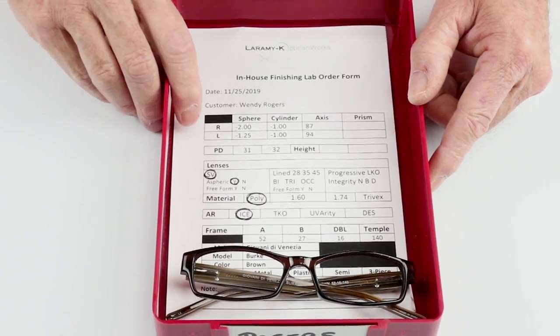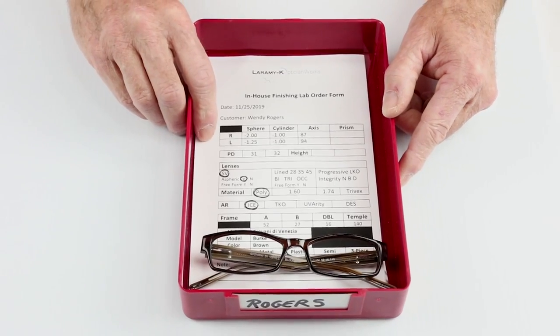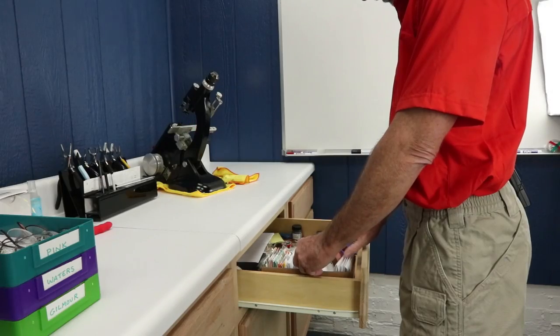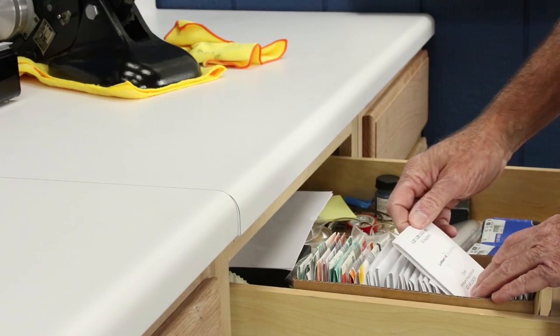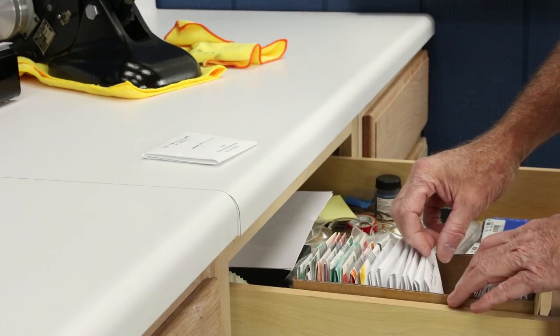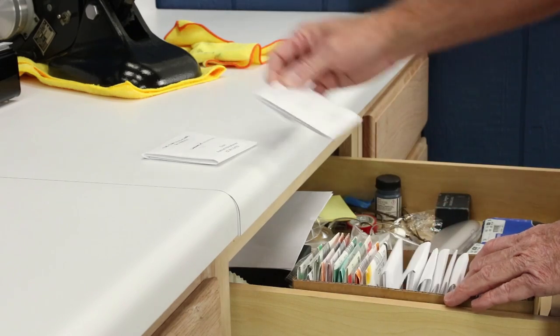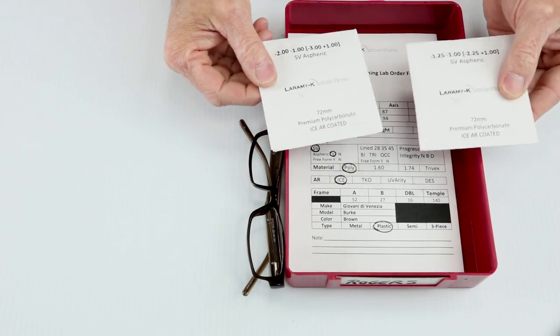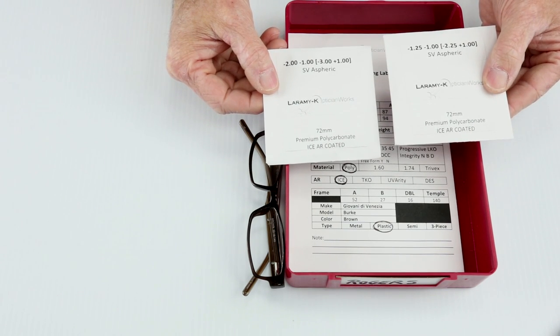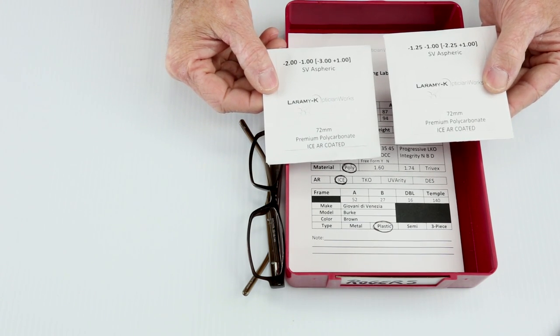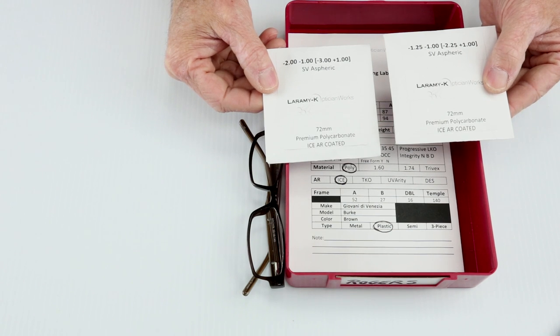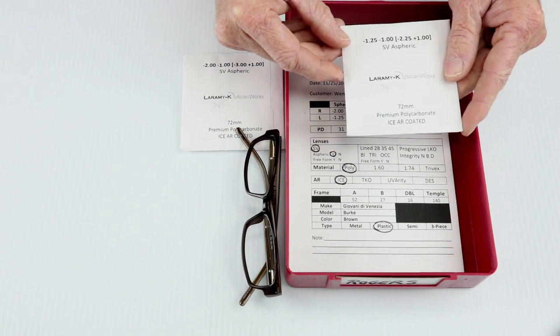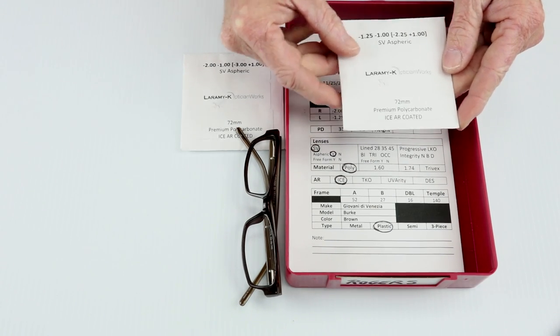The very first thing you're going to do is make sure that those lenses are actually in stock. So let's go over to the lens stock drawer. Make sure we got them. Yes, we do. Fantastic. All right, so we have our lenses here. I've got my minus two, minus one, single vision, aspheric, premium polycarbonate with the ICE AR coated for my right, and I've got my minus 1.25, minus one for my left.